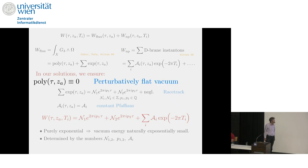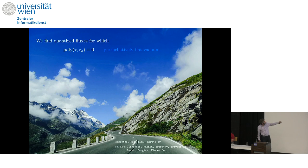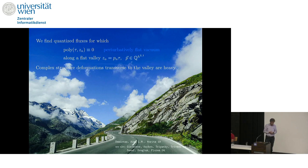So a little bit more detail about some of the properties I've indicated here. First, a perturbatively flat vacuum. What is that? We find quantized fluxes for which the polynomial part of the flux superpotential vanishes identically along one complex direction in the moduli space. A direction in which the complex structure moduli vector is proportional to the axio-dilaton by some vector of constant rational numbers. So we can use the axio-dilaton as the coordinate along the valley and measure our progress along the valley that way. And the complex structure deformations transverse to the valley are heavy and can be integrated out. But the along valley modulus remains light, in fact massless so far, and we'll deal with it later.